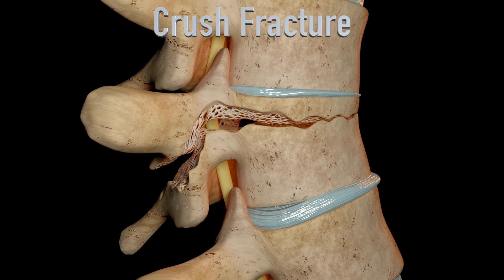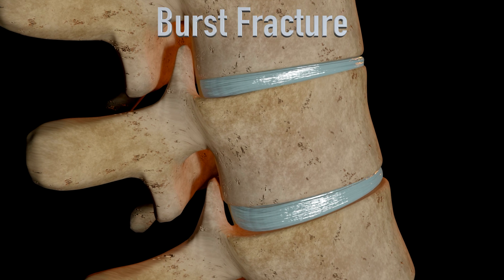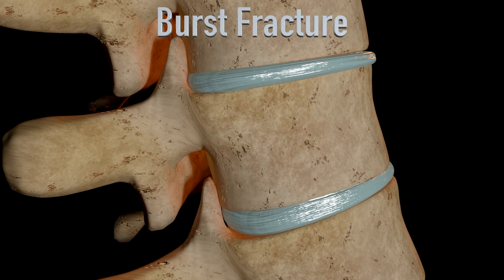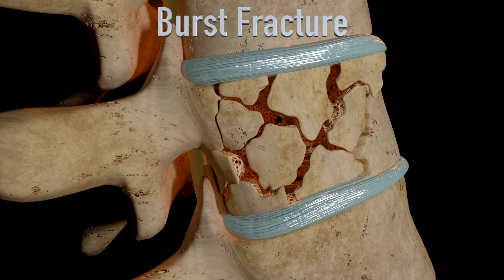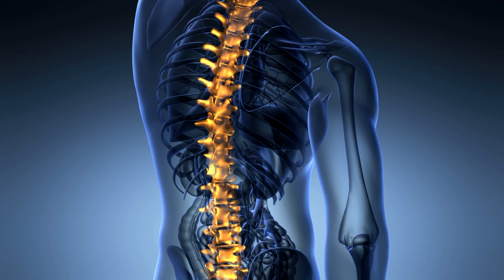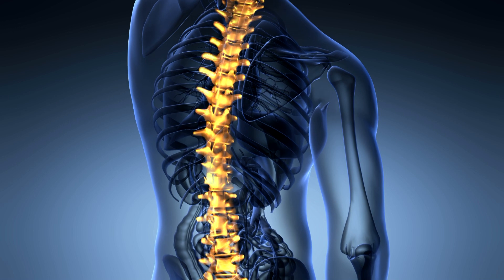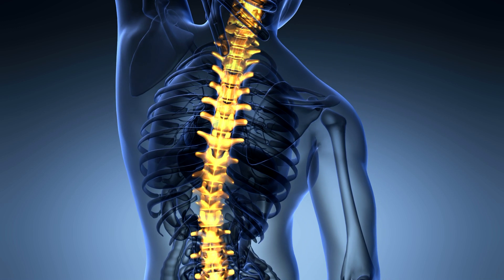A burst fracture causes some loss of height in both the front and back walls of the vertebral body. Burst fractures can be unstable and dangerous, resulting in progressive deformity or neurological compromise. Any vertebral fracture is usually followed by acute severe back pain.